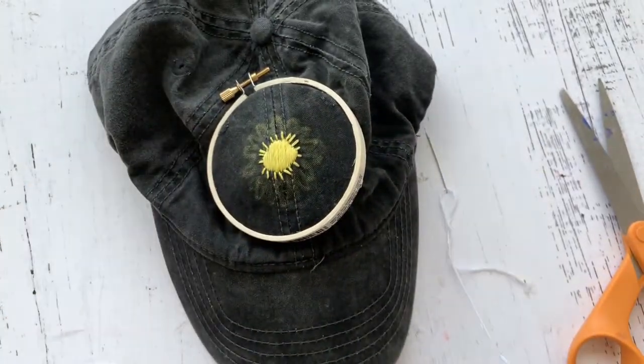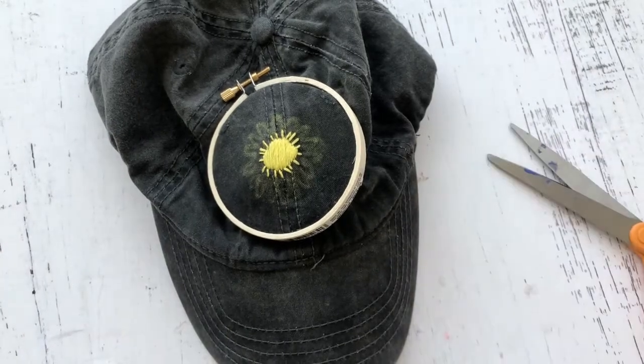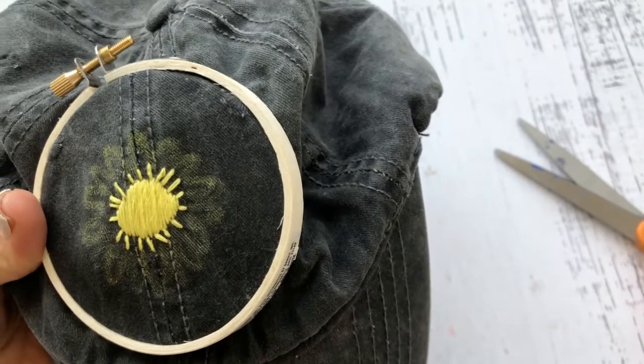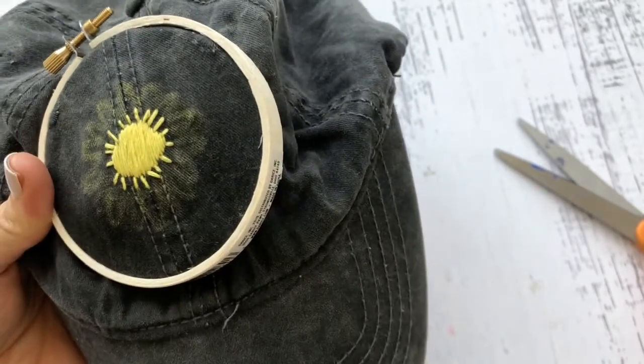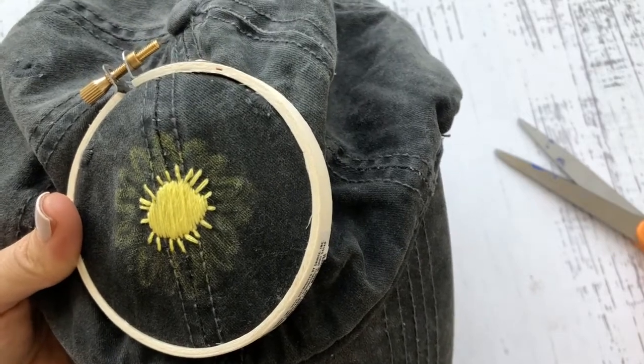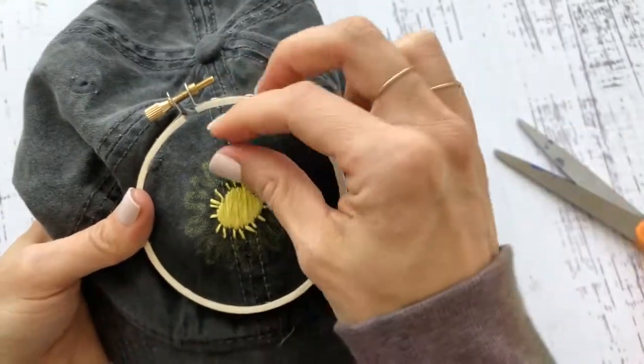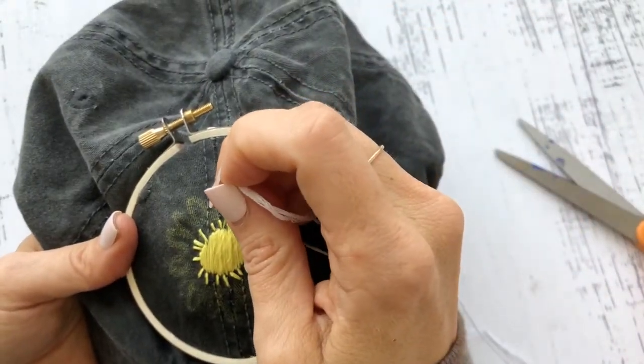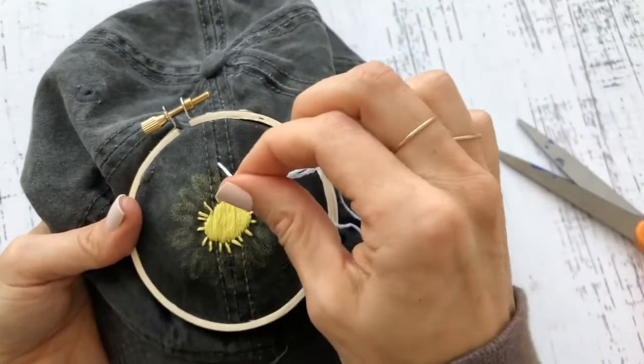How we're gonna do this is similar, we're gonna do a velvet stitch as well. But I like with flower petals to do one side and then the other side. So I'm gonna start at the tip in the middle of one of my flower petals, and then I'm gonna take it all the way to my center of my flower.